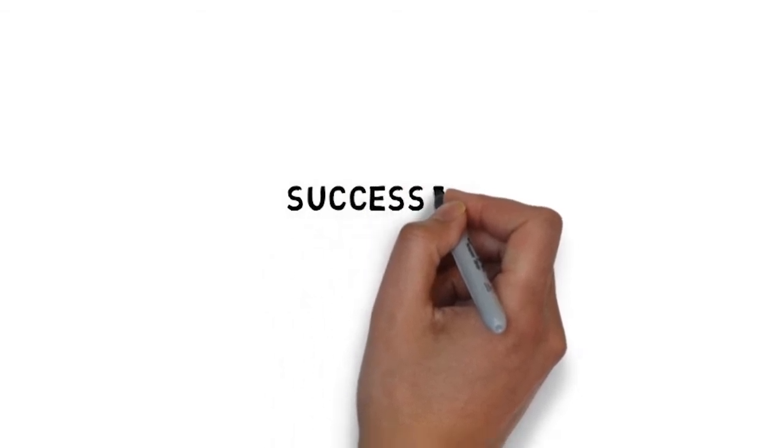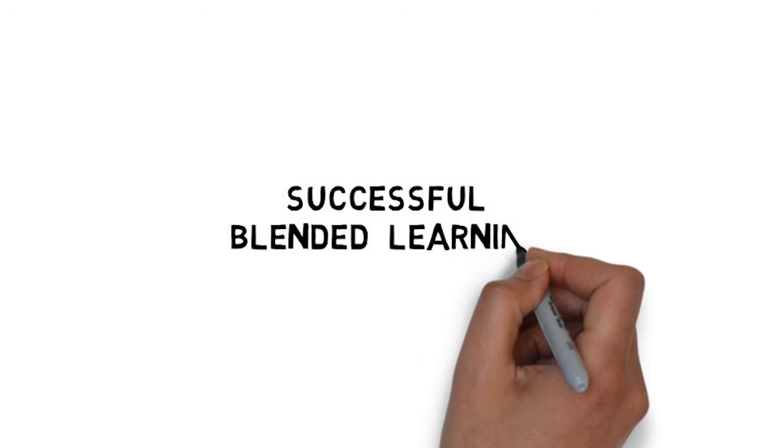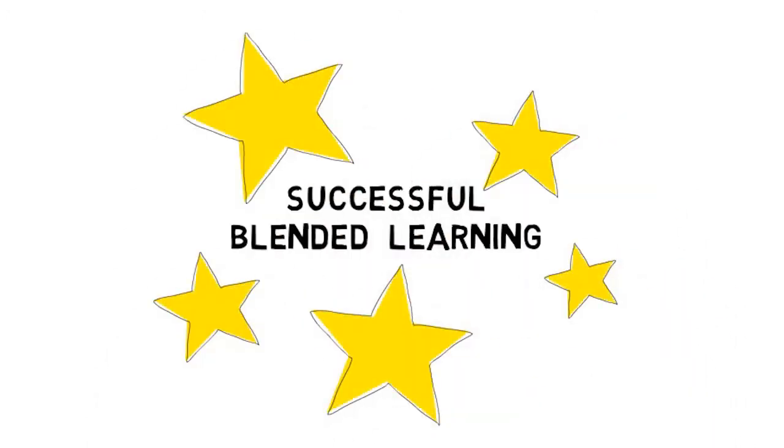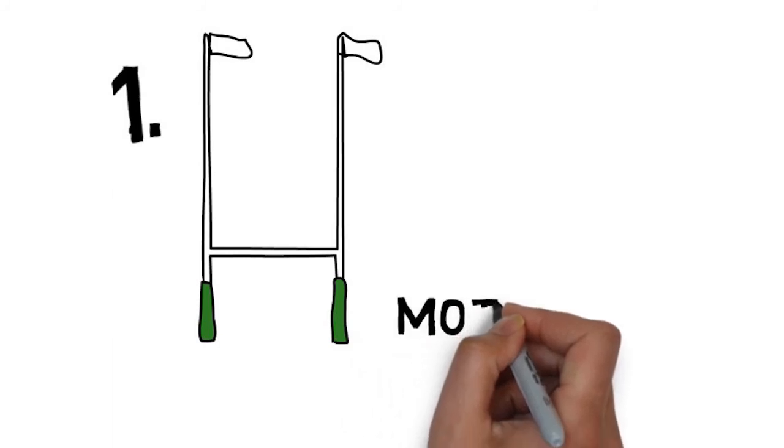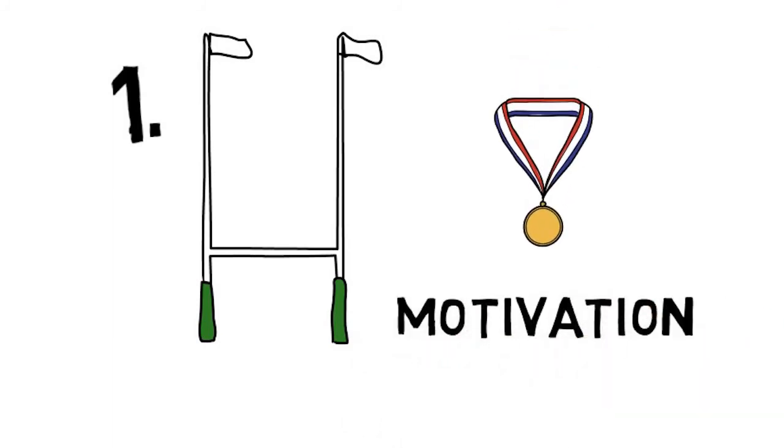Research and student feedback also tells us that there are specific things you can do as a student to ensure your success in a blended learning environment. Here are the top five things you can do. Number one, focus on your reasons for studying law and review your goals regularly. Motivation is the most reliable predictor for success in online and blended learning environments.